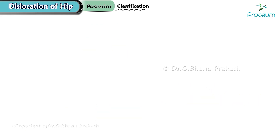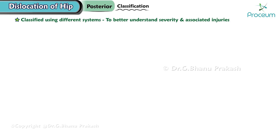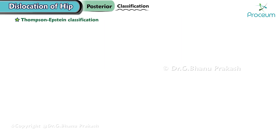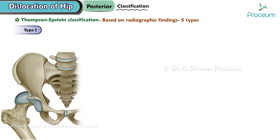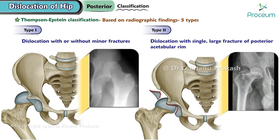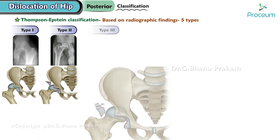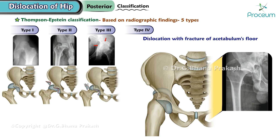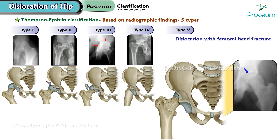Classification of posterior hip dislocation. Two commonly used classification systems are the Thompson-Epstein classification and the Stewart and Milford classification. The Thompson-Epstein classification categorizes posterior hip dislocations into five types based on radiographic findings: Type 1 involves dislocation without significant fractures or with minor fractures. Type 2 includes dislocation with a single large fracture of the posterior acetabular rim. Type 3 consists of dislocation combined with a comminuted fracture of the rim of the acetabulum. Type 4 comprises dislocation accompanied by a fracture of the acetabulum's floor. Type 5 involves dislocation along with a femoral head fracture.